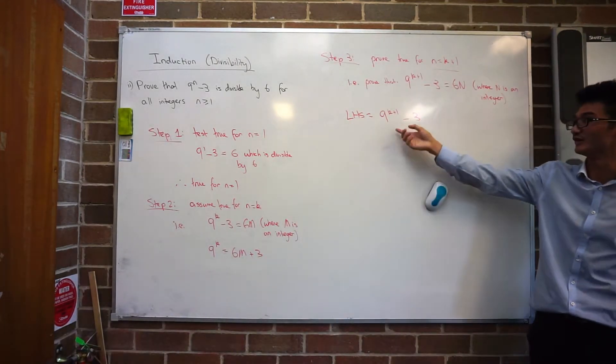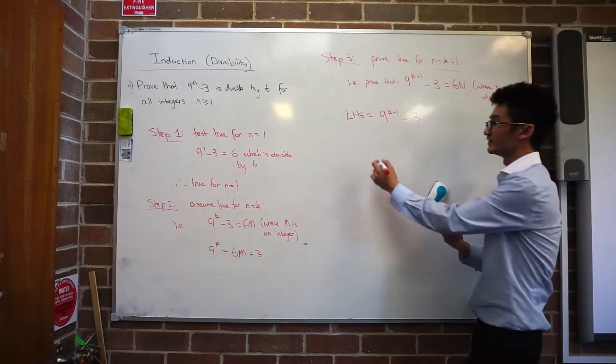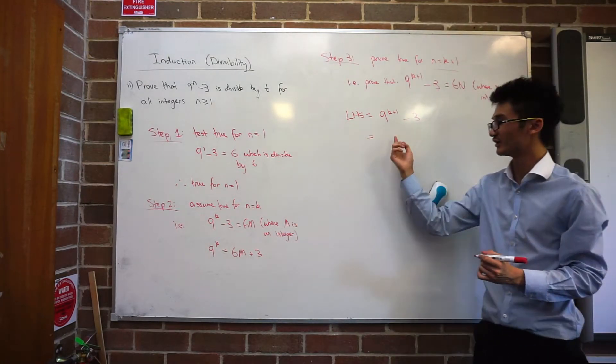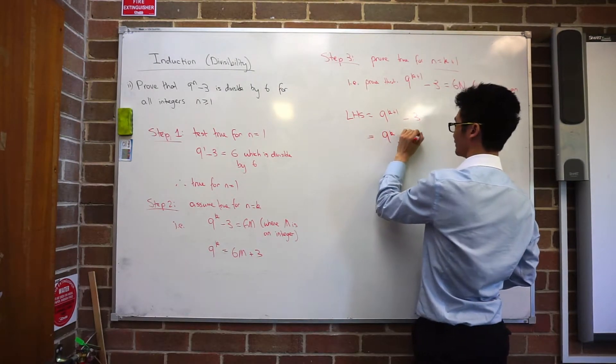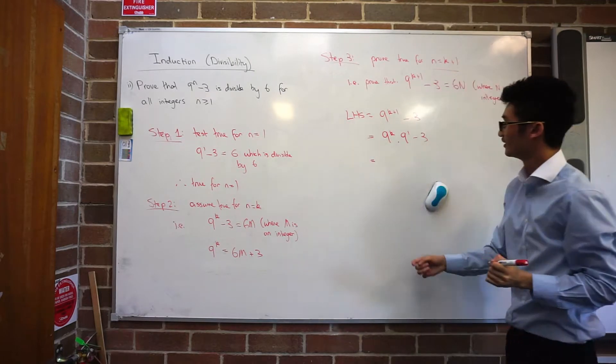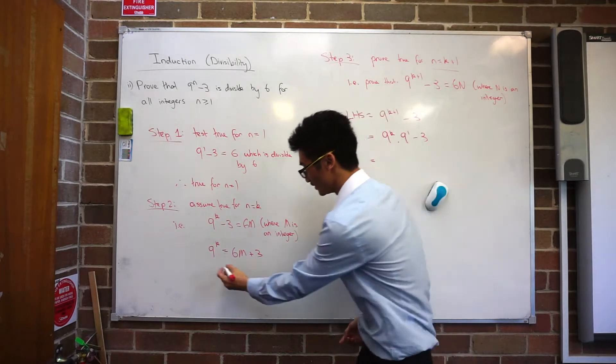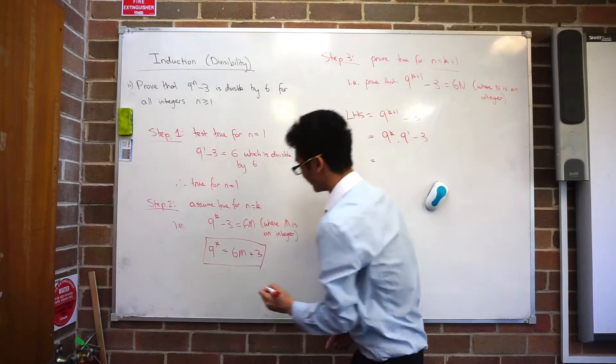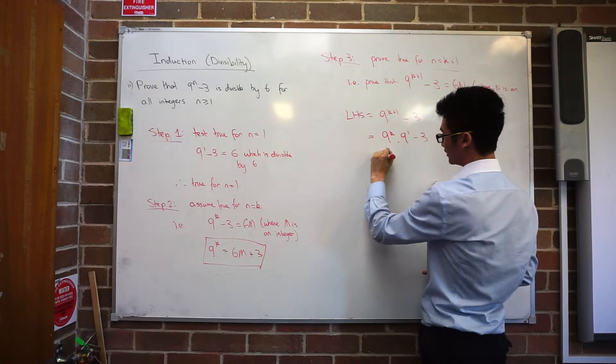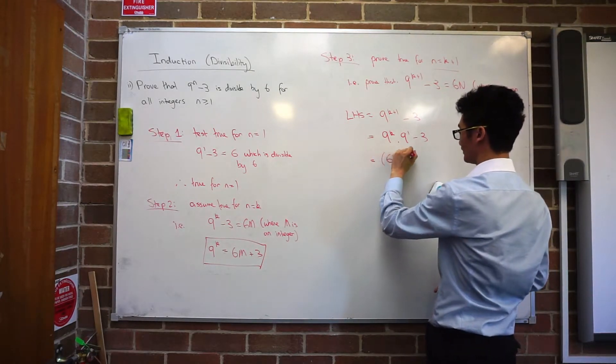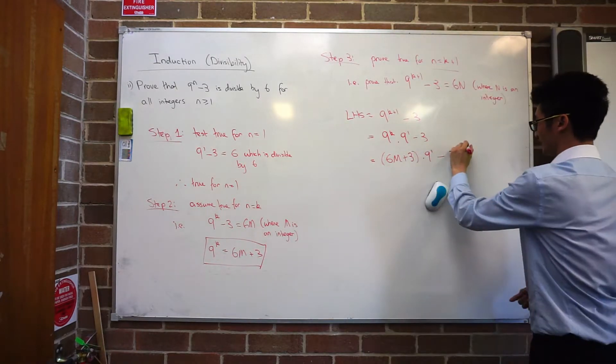And then the next step, this I want to try and break up or see if I can rearrange it in some way so I can substitute something in from step 2. So I've got 9 to the k plus 1 which is 9 to the 1 minus 3. And then I can see I've got a 9 to the k here. I've also got a 9 to the k over here. So I can use this part that I found in step 2 and I'll replace it with that result. So I've got, instead of 9 to the k, I've got 6m plus 3 multiplied by 9 to the 1 minus 3. And that's from step 2.